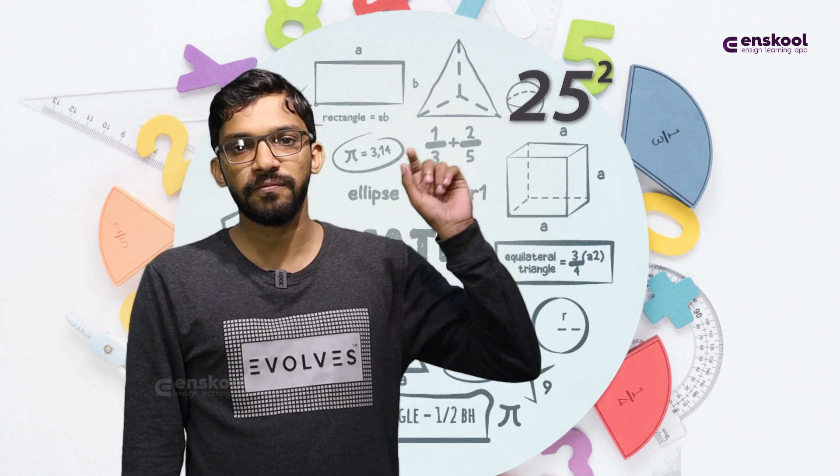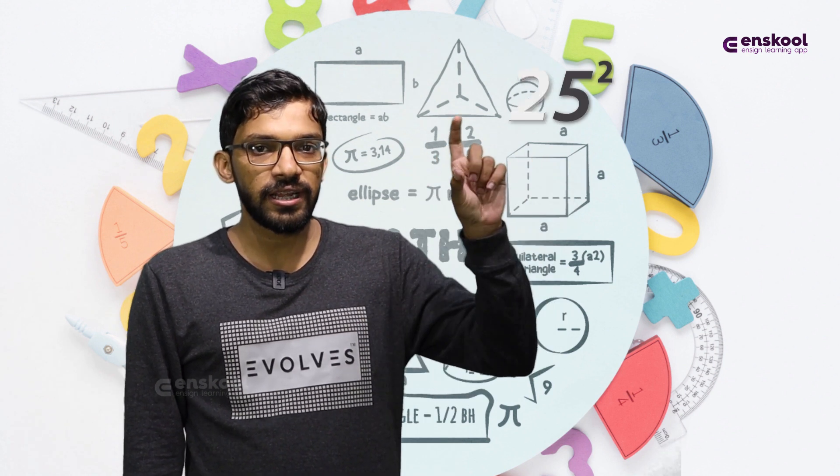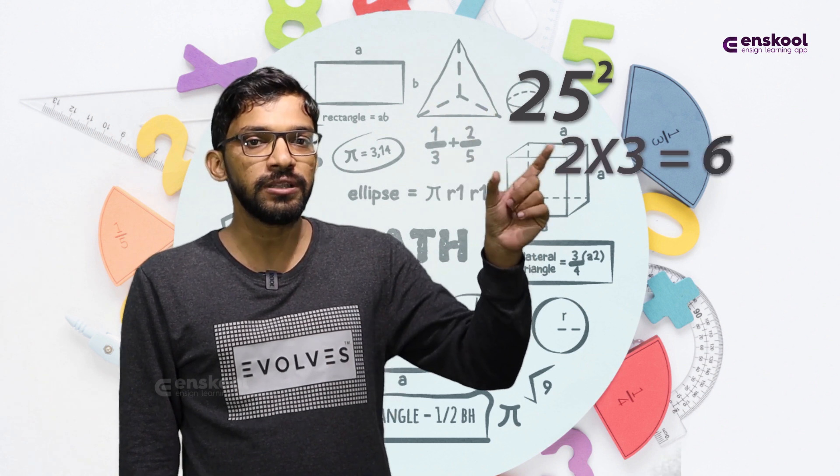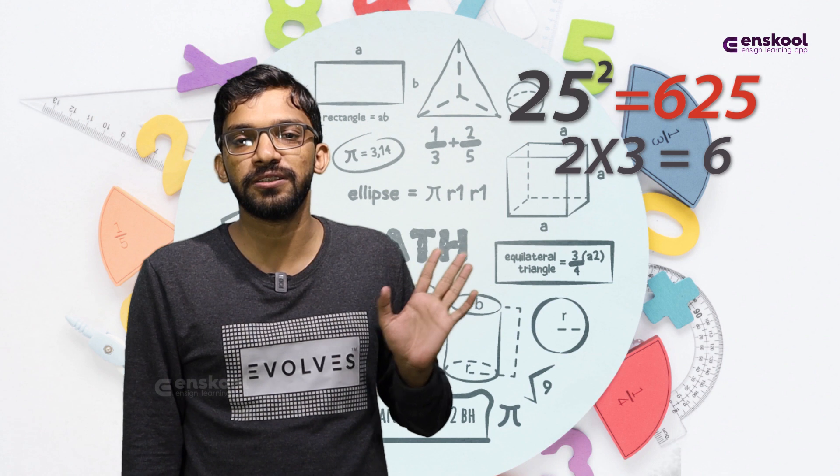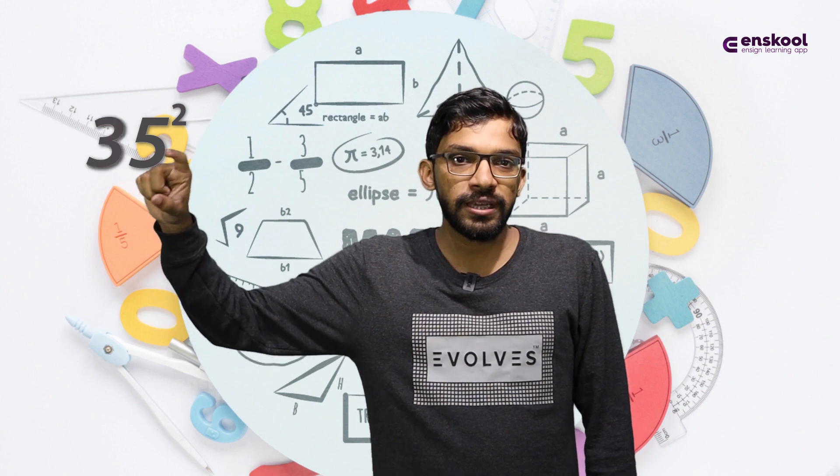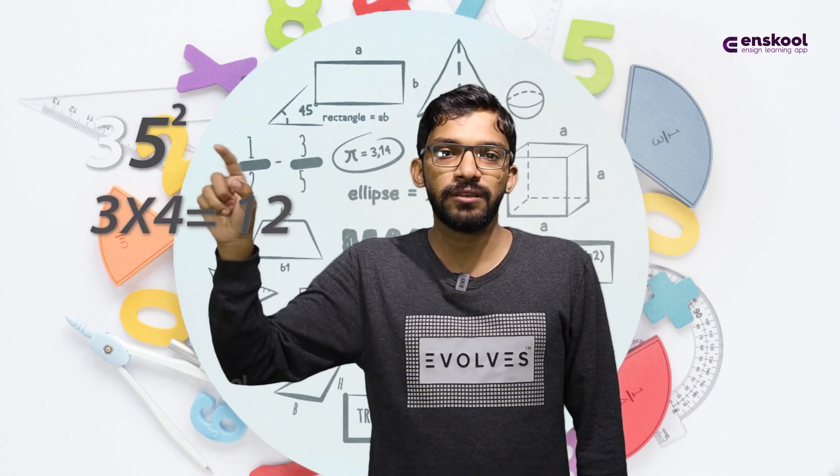Any number ending in 5, when squared, will end in 25. Let's try 35. 3 times 4 is 12, append 25. 35 squared equals 1225.